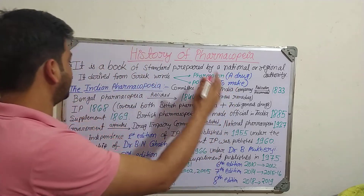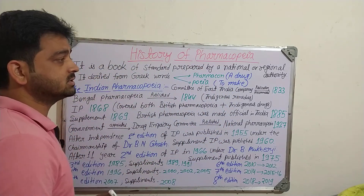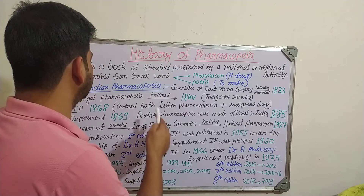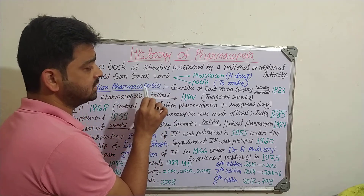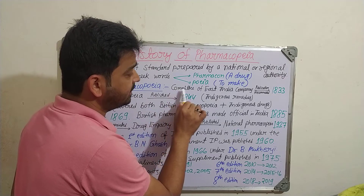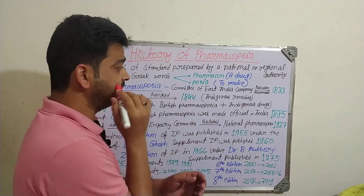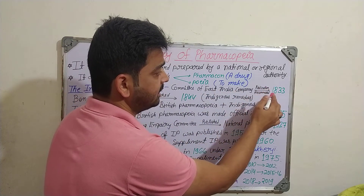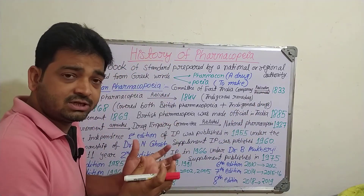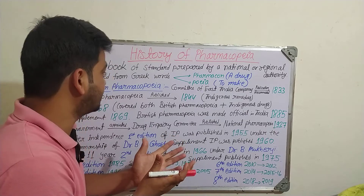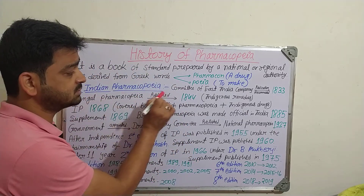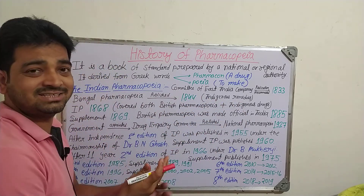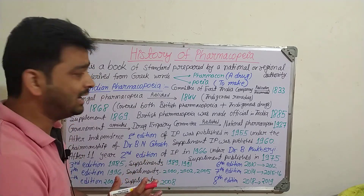Coming to the Indian pharmacopoeia, let us understand how it came into force from the beginning. When India was under the control of the British government, the committee of the East India Company recommended a publication in 1833 — that was the origin of the IP. Later, the Bengal Pharmacopoeia was published in 1844, compiled with all the indigenous and traditional remedies related to plants, natural sources, and drugs.